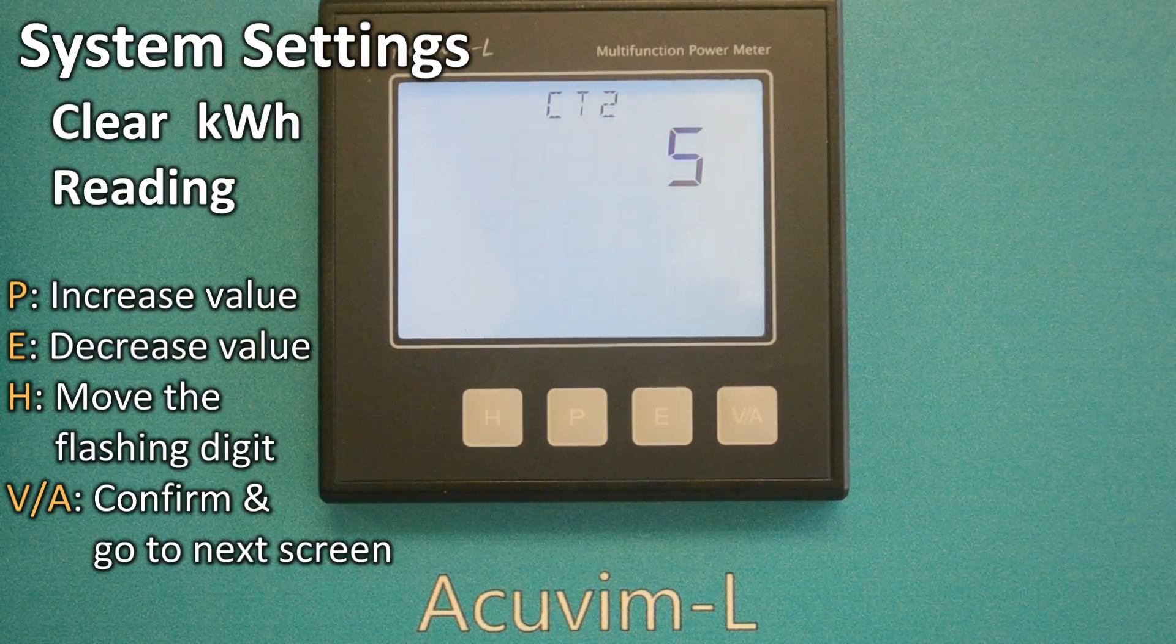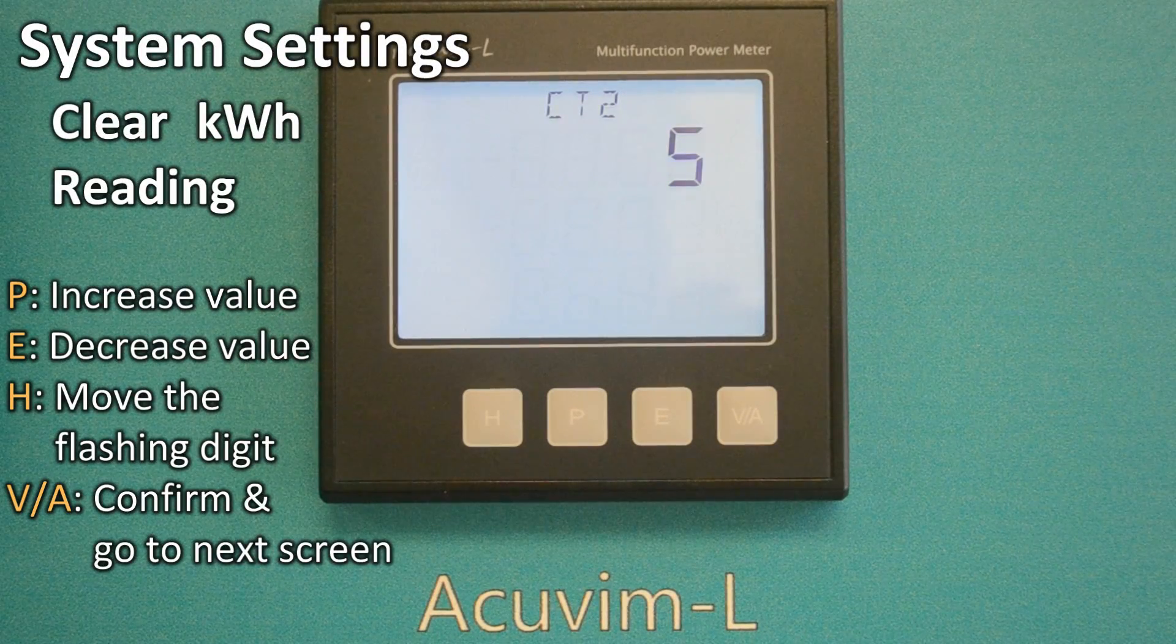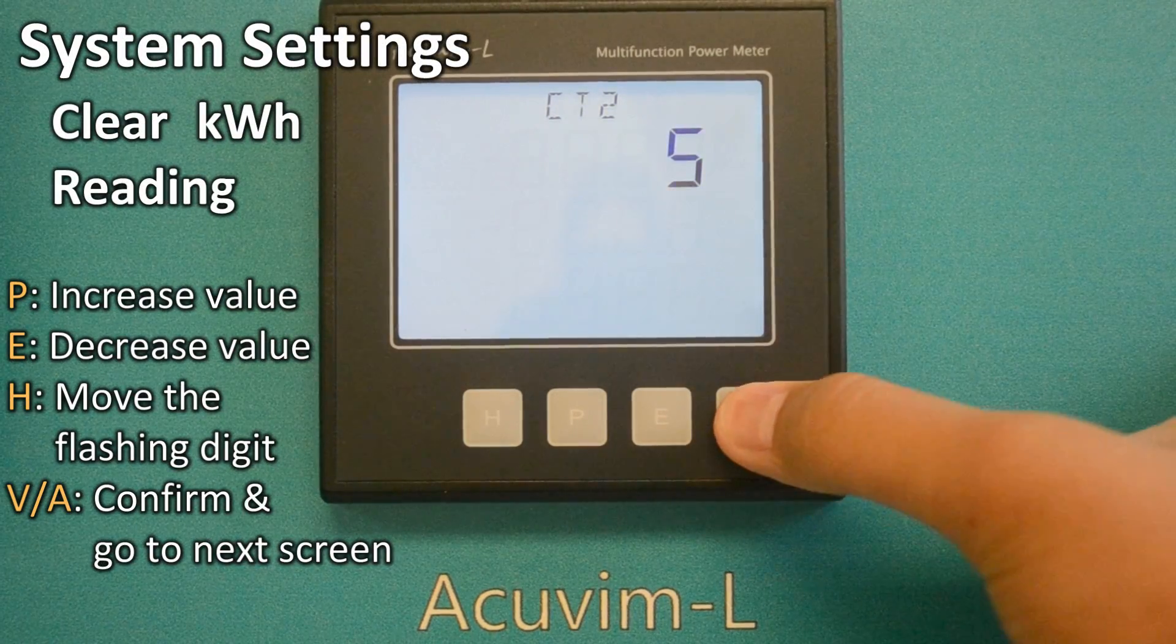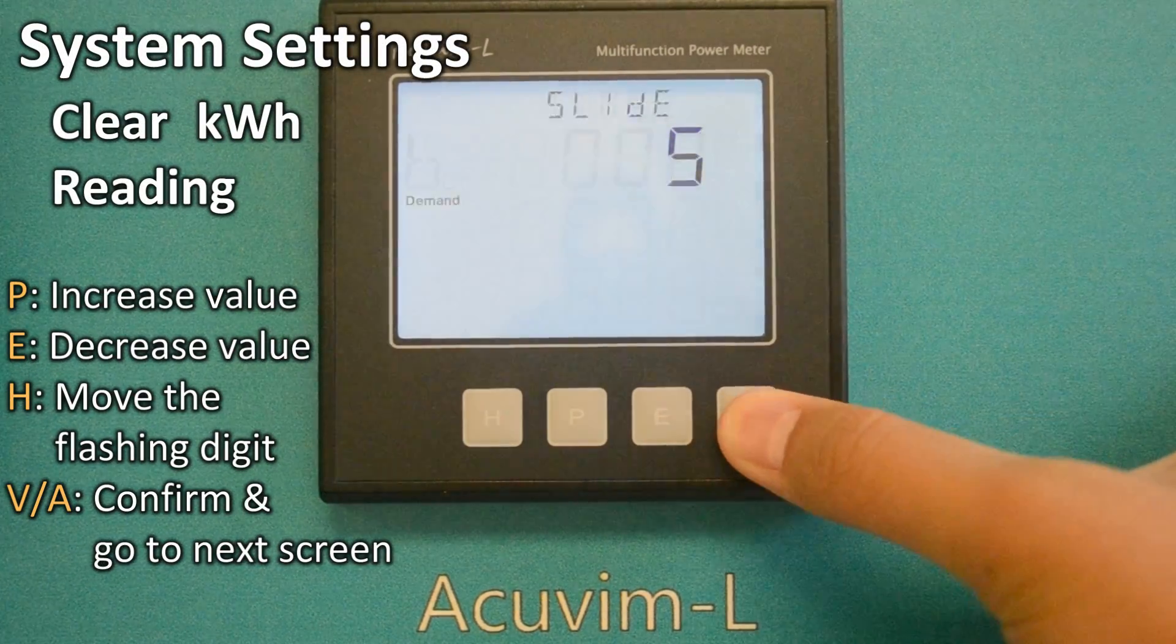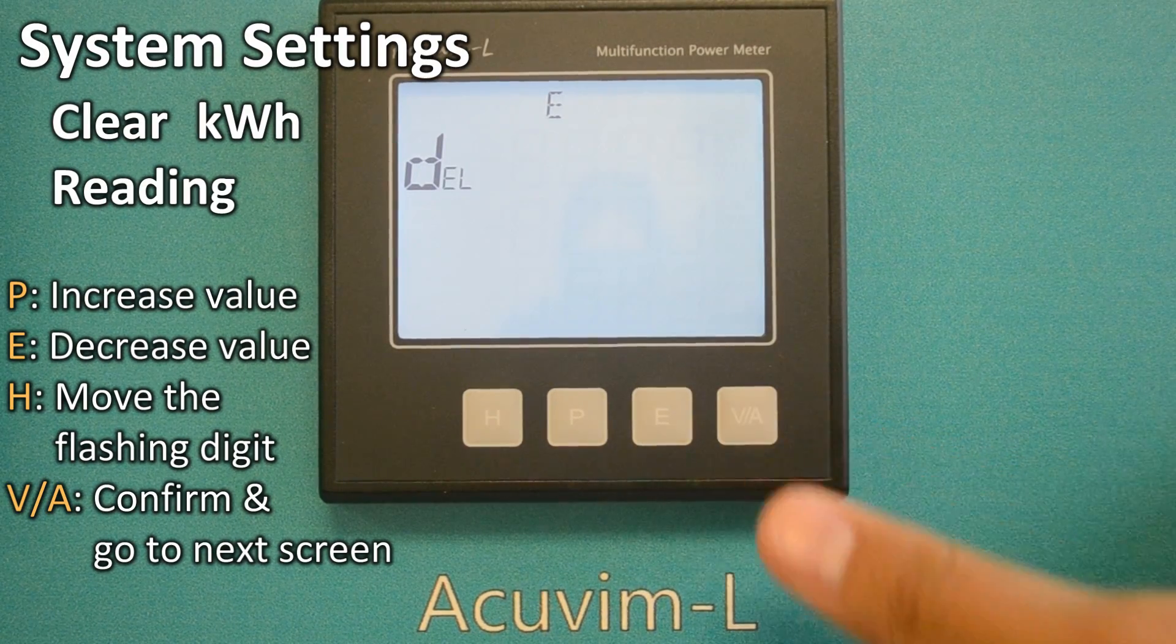If you want to clear the kilowatt hour reading, repeatedly press the VA key until you see E, DEL, 0. Then change it to 1.